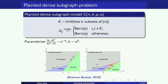As alpha increases, your signal strength decreases, so both recovery and detection become harder. As beta grows, the problem should get easier. The phase diagram for recovery is more complicated — the impossible regime does not exactly align with the impossible regime for detection. There is an easy regime for recovery by degree counting, and a regime conjectured to be computationally hard.